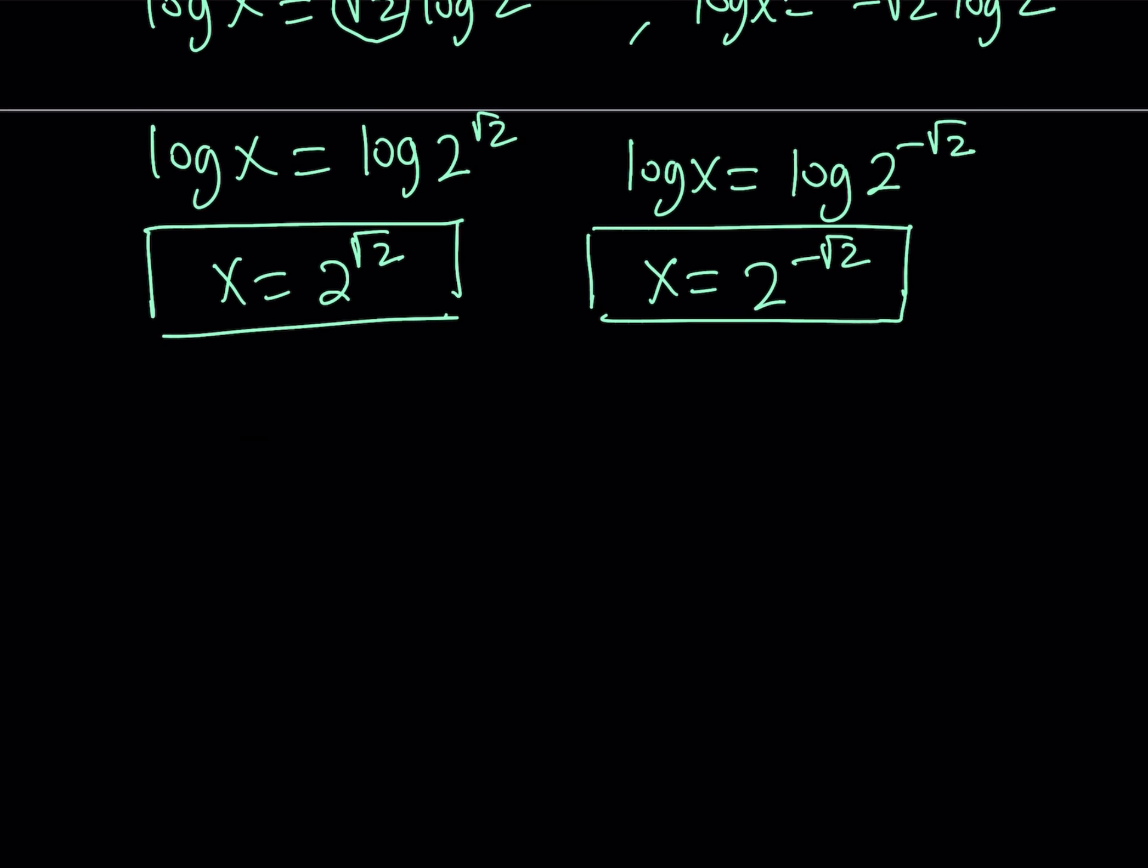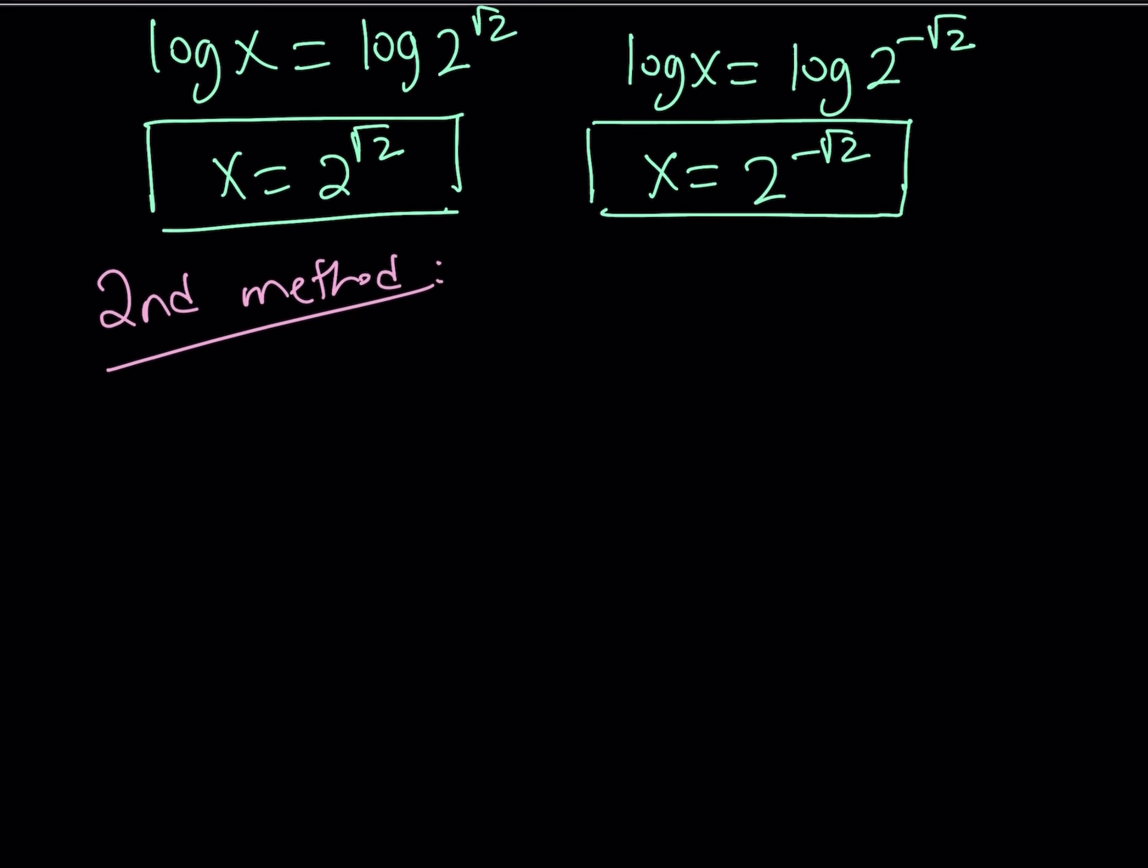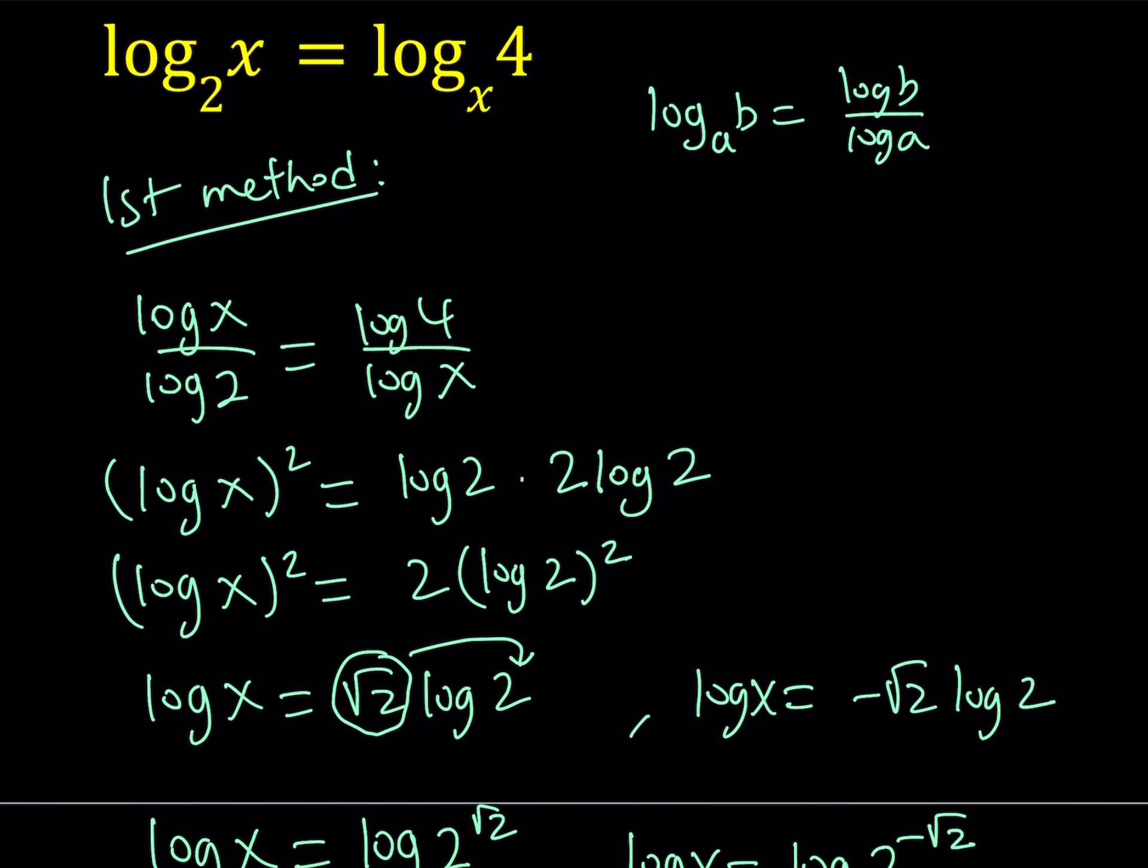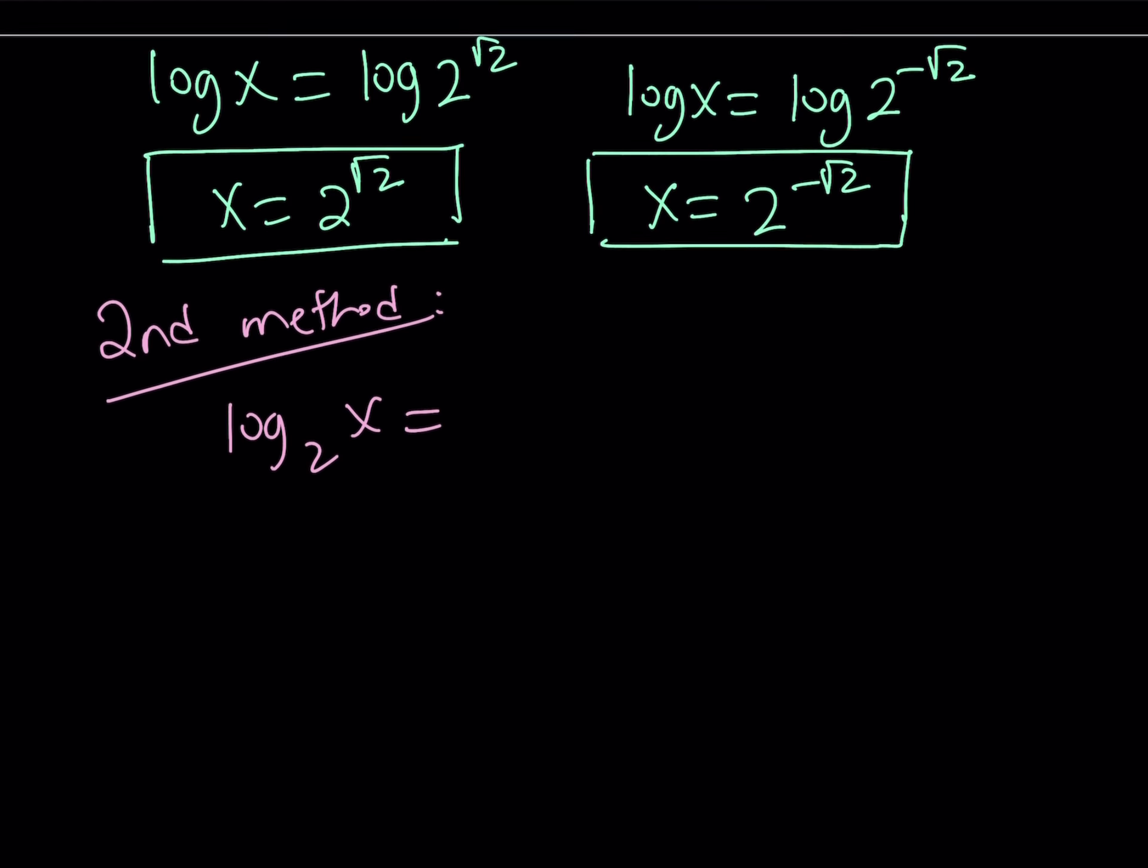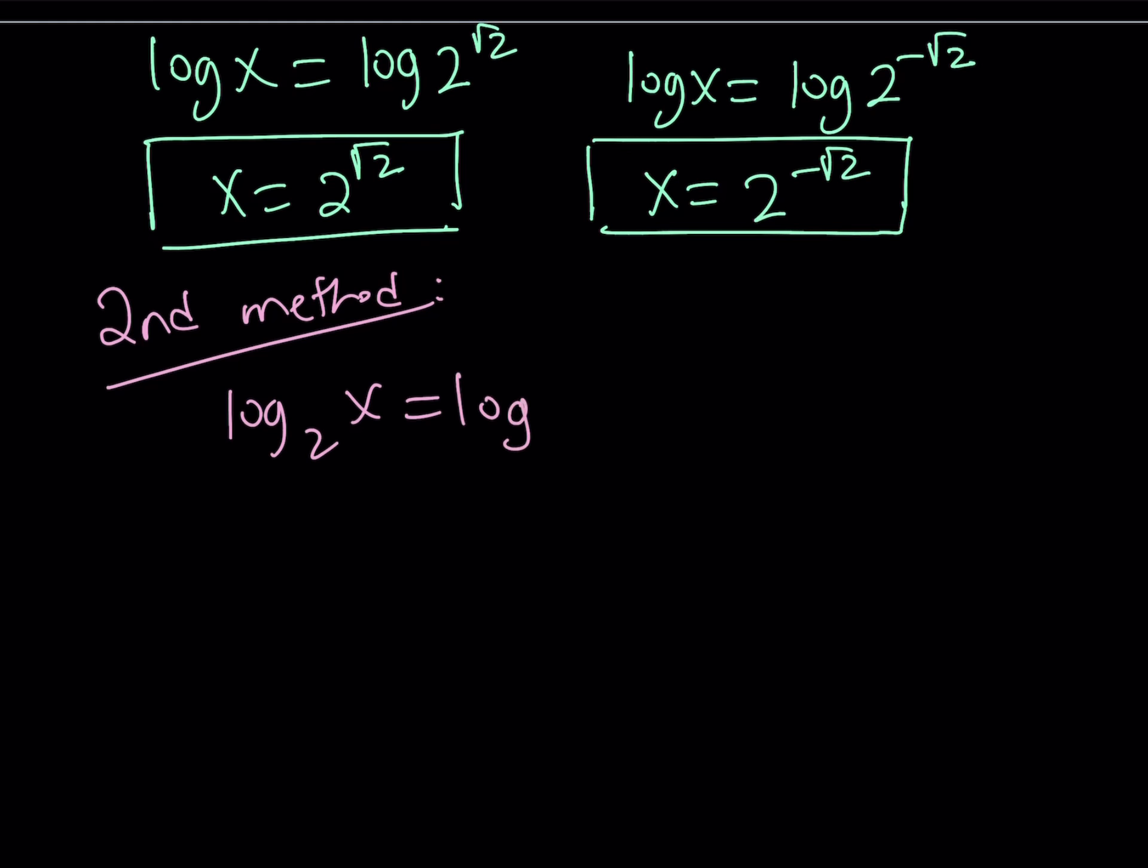Okay. Now, let's talk about the second method. Let's see how that works. Now, the second method, let's go ahead and rewrite our original equation. We have log x with base 2 equals log 4 with base x.